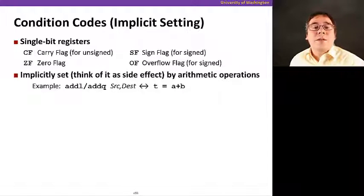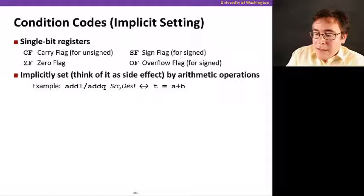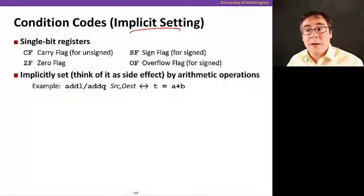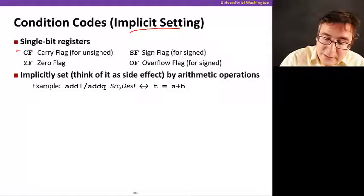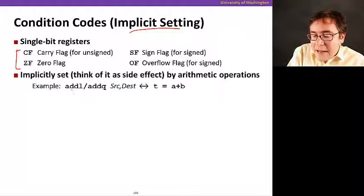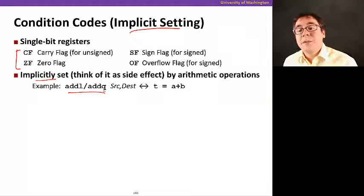Let's see now how these condition codes are set. The first way we're going to see is implicit setting, which just happens implicitly when you carry out some operations. These are the single-bit condition registers that we're going to be talking about, and they are implicitly set when you execute some instructions, for example, an addition.